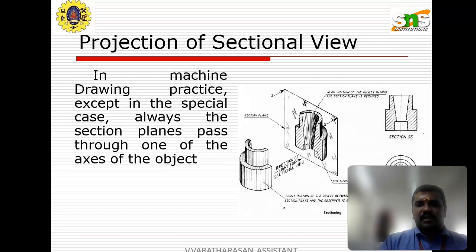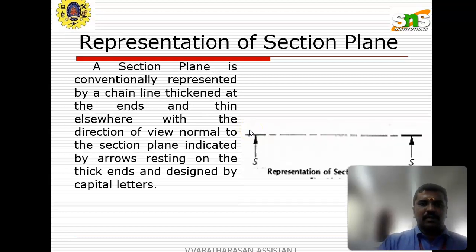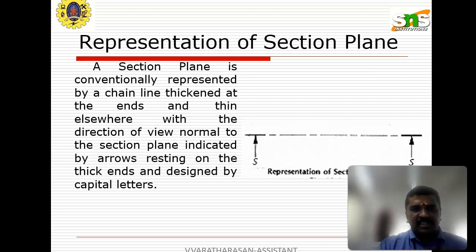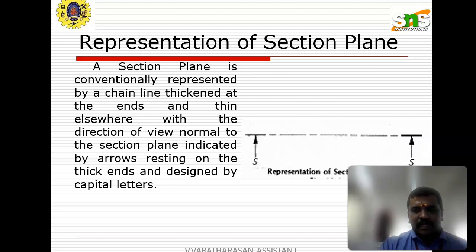This drawing will be represented in the top view sectional view. The sectional plane is conventionally represented by a chain line thickened at the ends and thin elsewhere, with the direction of view normal to the sectional plane indicated by arrows resting on the thick ends and designated by capital letters. This line is known as the cutting plane line or sectional line in the machine drawing diagram.